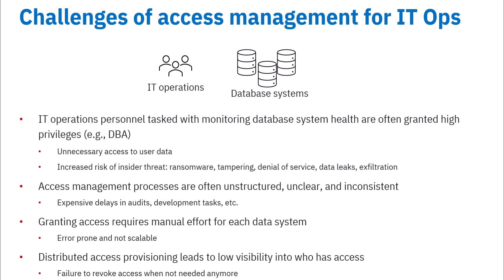This causes significant delays in terms of development tasks and audits. Granting access to database systems works in a distributed way — a DBA has to manually create access for another user or group. Because of the manual nature, these processes are error-prone and not scalable. These distributed access models also lead to low visibility in terms of who has access, and fail to provide information to revoke access when people no longer need it.